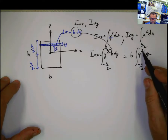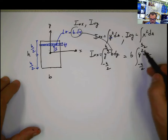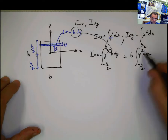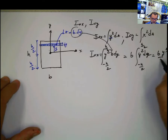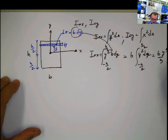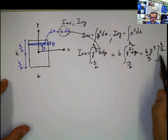Remember, this is the simplest integral. This to the third. 2 plus 1, 3 divided by 3. b y to the third divided by 3 between negative h/2 and h/2.